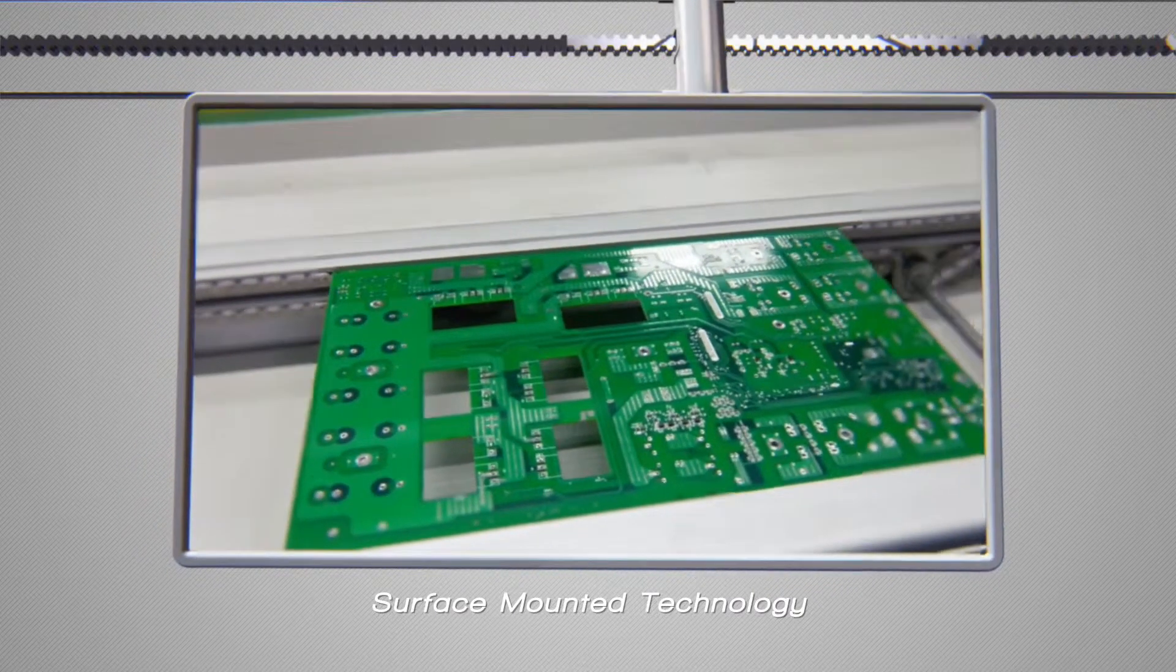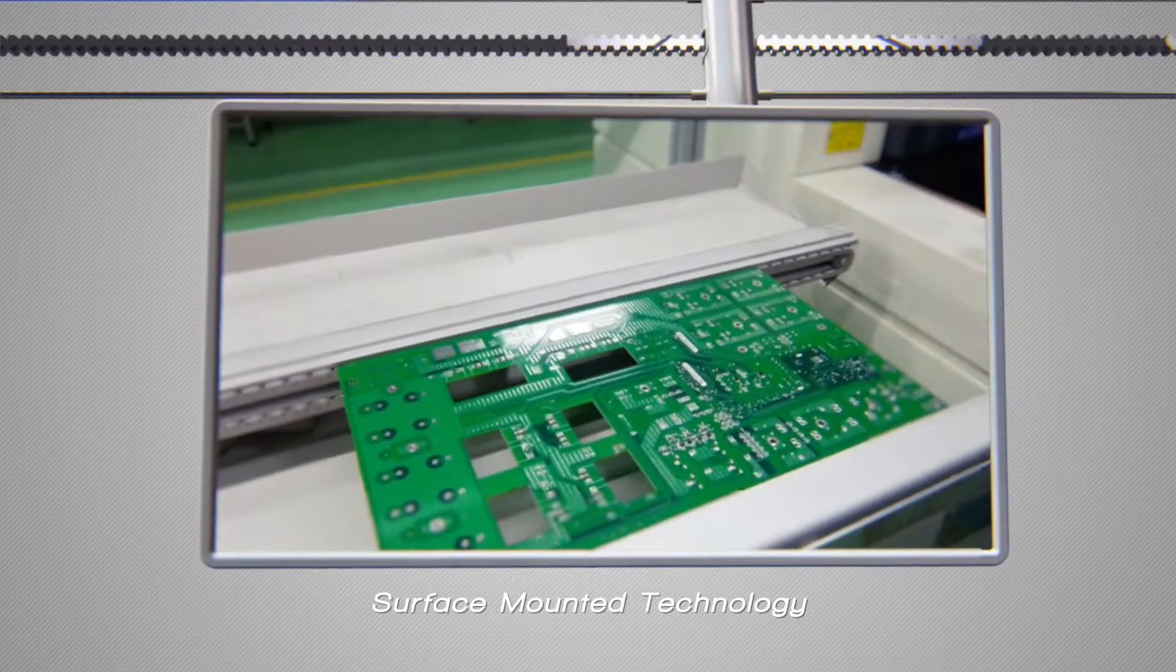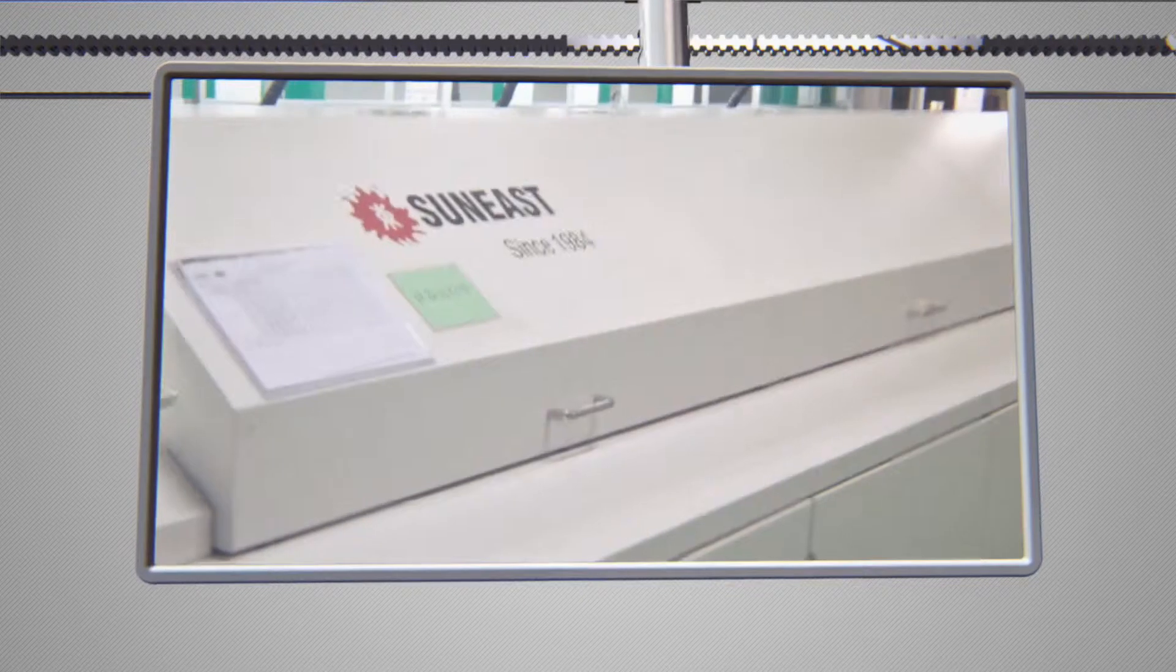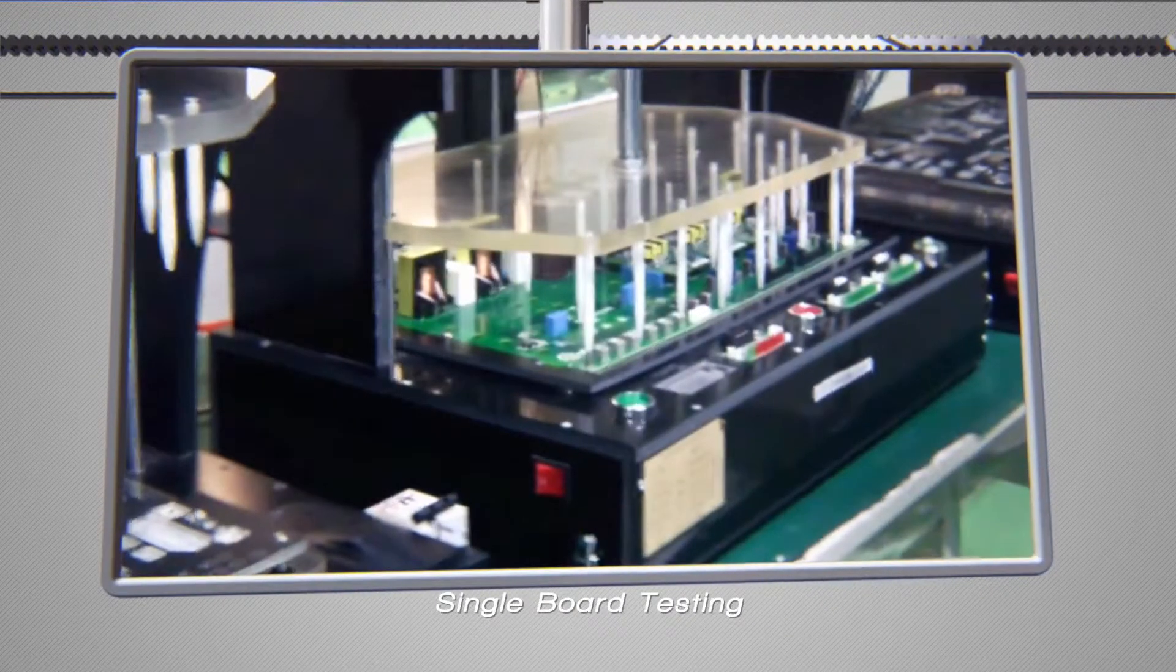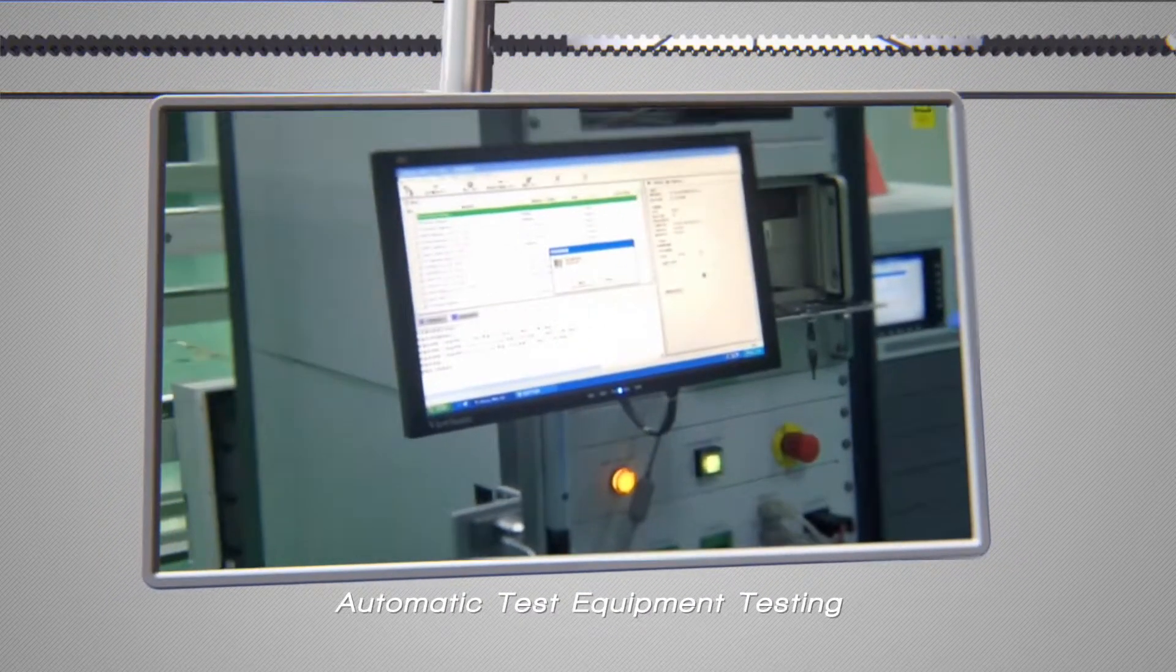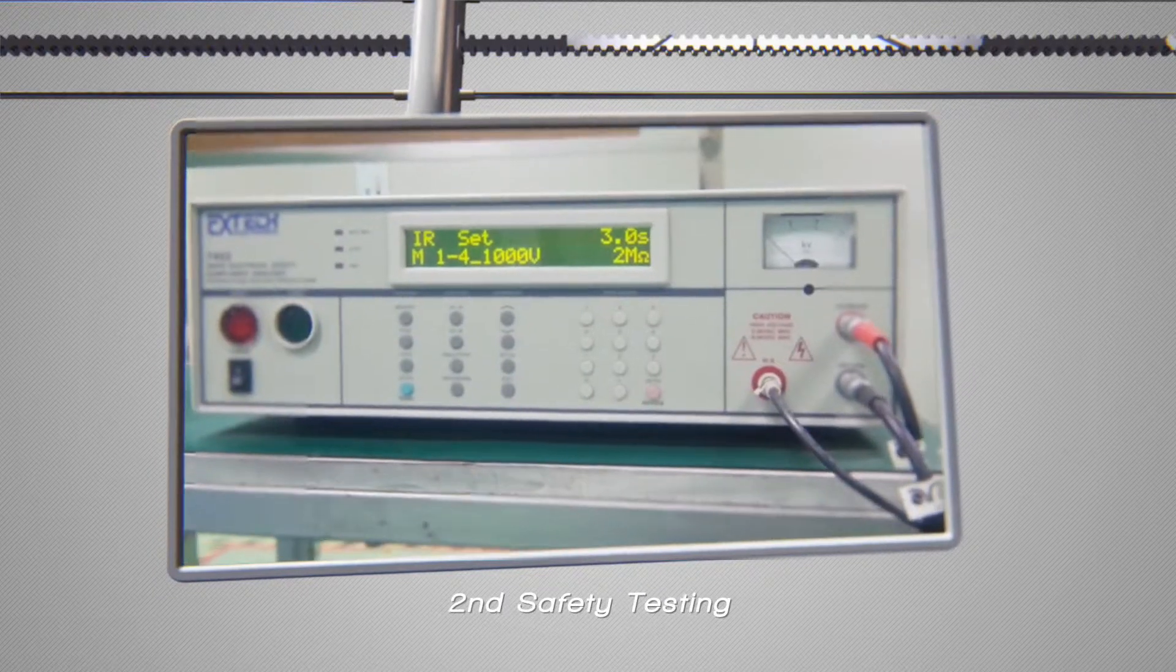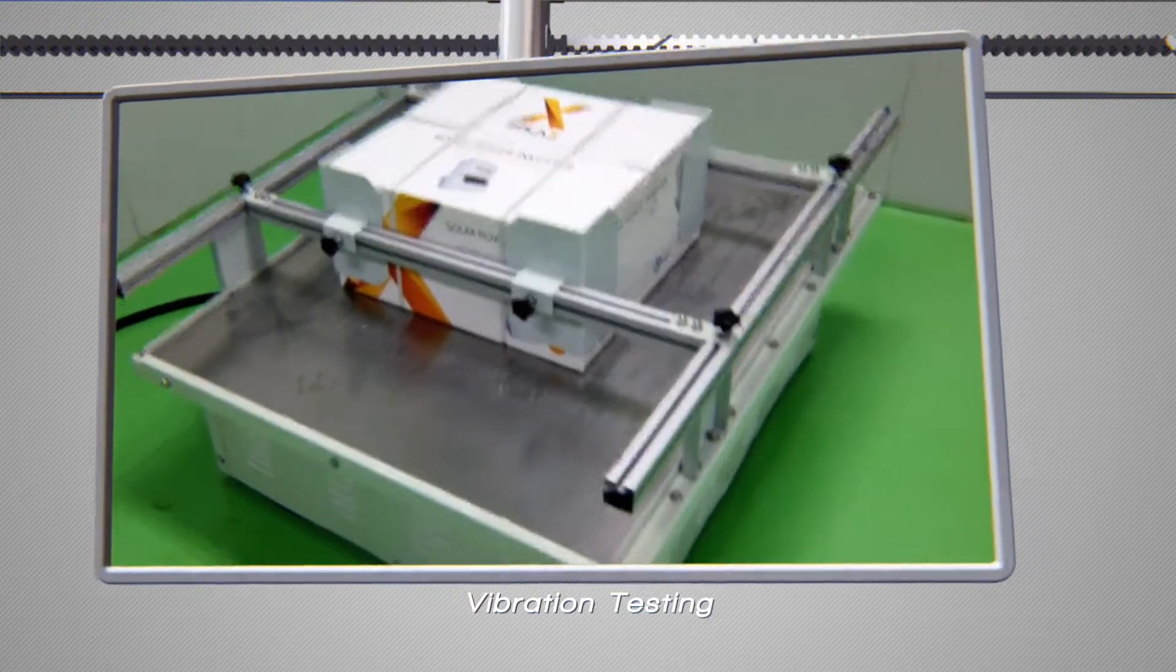Controlling everything gives us complete quality control and reduces your cost. Every inverter goes through a rigorous 8-step quality control process including Automatic Optic Inspection Testing, Single Board Testing, Safety Testing, Automatic Test Equipment Testing, Aging Testing, Second Safety Testing, Second Automatic Test Equipment Testing, and Vibration Testing.